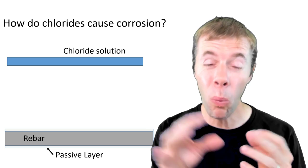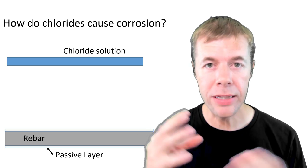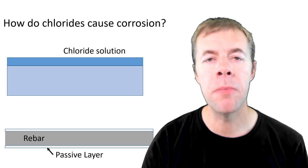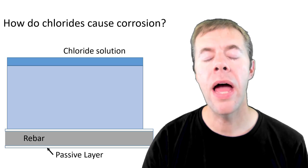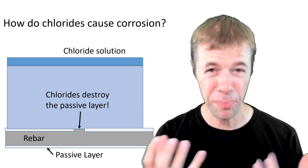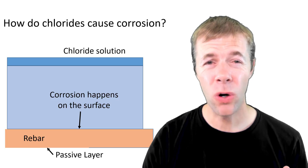So how does this happen? Well, one method is that chlorides come from the outside of the concrete and they come in over time, more and more, and finally when they get to the reinforcing steel they break down something called the passive layer and it starts corrosion.